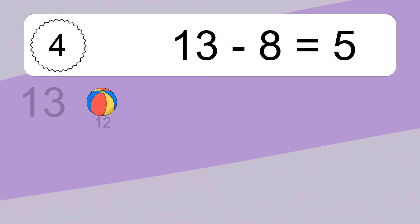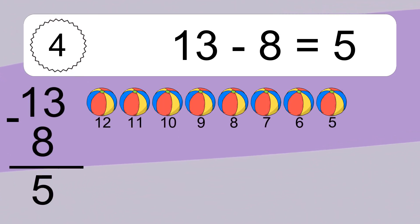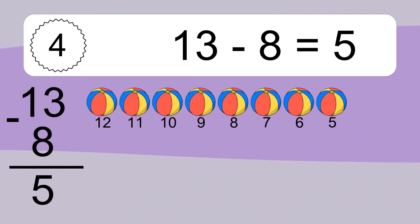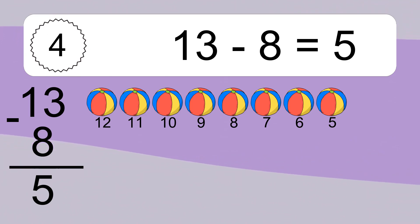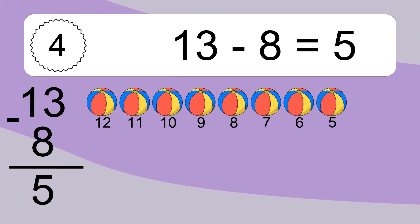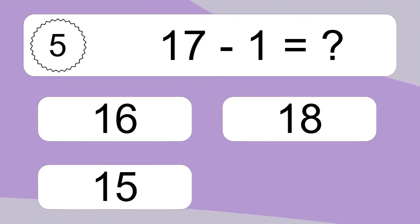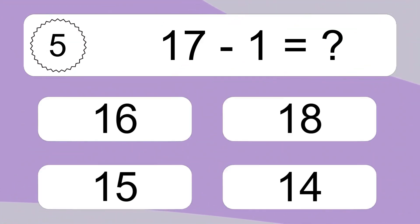13 minus 8 equals what? 13 minus 8 equals 5. Let's count it: 12, 11, 10, 9, 8, 7, 6, 5.